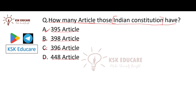The correct answer is Option D — 448 articles. The Indian Constitution currently has 448 articles, along with 25 parts, 12 schedules. Initially, when the constitution was built, it had 395 articles.